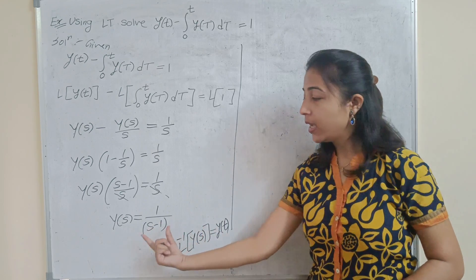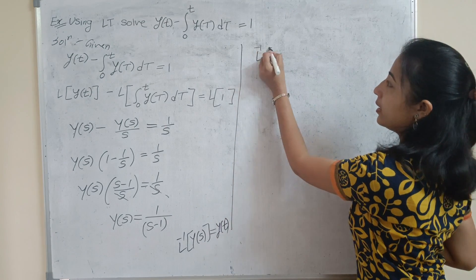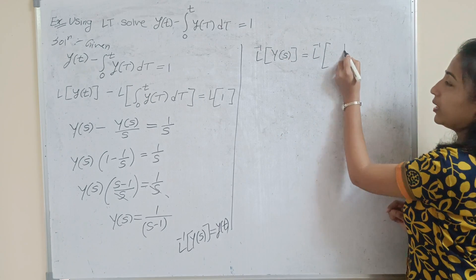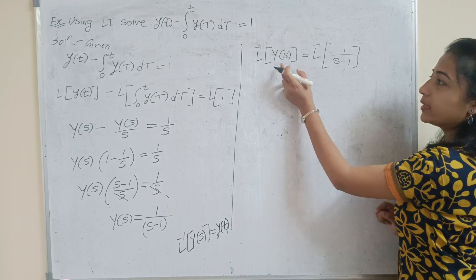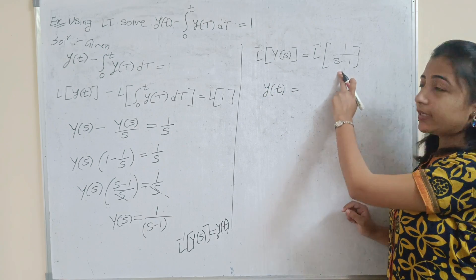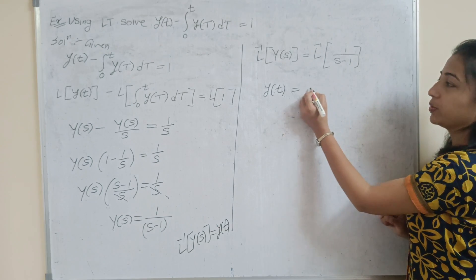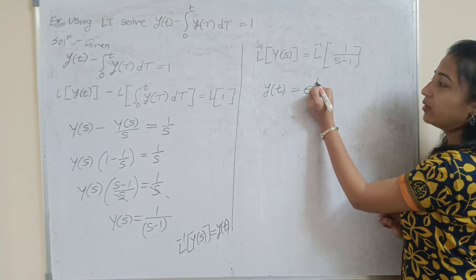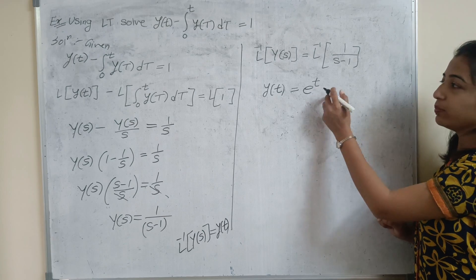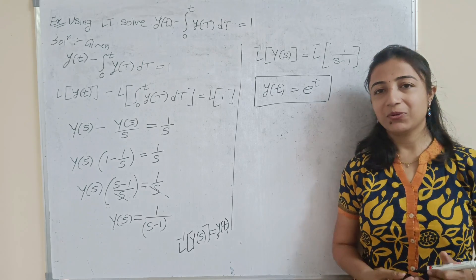Applying the inverse Laplace on both sides: L⁻¹{Y(s)} = L⁻¹{1/(s − 1)}. The left side is y(t). The inverse Laplace of 1/(s − 1) corresponds to e^(at) with a = 1, so the result is e^t. Therefore, the solution of this problem is y(t) = e^t. I hope this is clear to you. Thank you for watching.